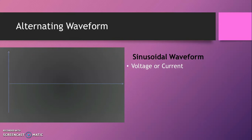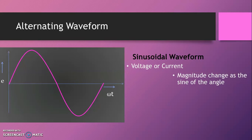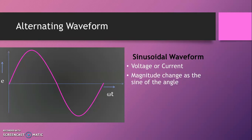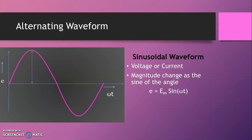Sinusoidal waveform is time dependent, so on the x-axis we take either time or we take angular frequency, and on the y-axis we take magnitude either voltage or current. The waveform is known as a sinusoidal waveform. The magnitude of the waveform changes as the sine of the angle. Mathematically, it can be indicated as E is equal to Em sin(ωt), where Em indicates the maximum value or maximum amplitude of the waveform.